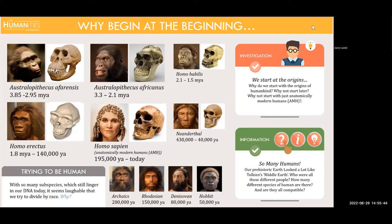Millions of years ago, Australopithecus, our most ancient ancestors, were living in Africa. Over time, those Australopithecus evolved into different species. The way that works is that over millions of years, a species adapts and changes in response to the environment, becomes isolated from other groups, and that isolated population develops into a brand new species. Hominids — all the groups related to humans — and the great apes spread out over time and throughout the world.